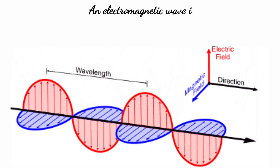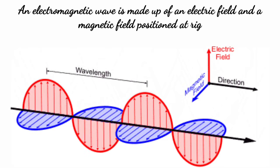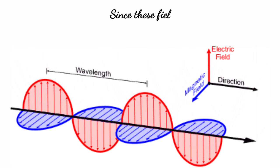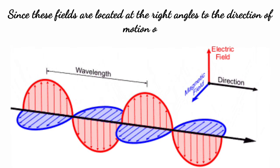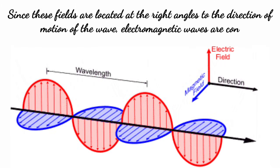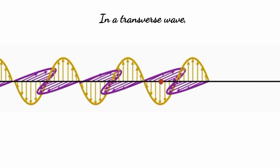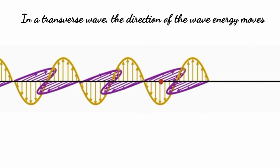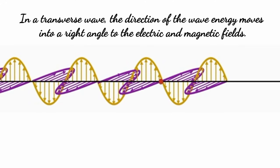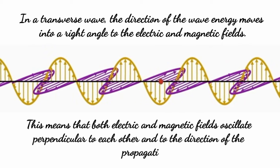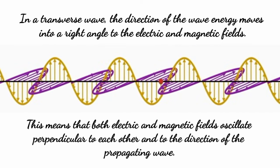An electromagnetic wave is made up of an electric field and a magnetic field positioned at right angles to each other and to the direction of motion of the wave. Since these fields are located at right angles to the direction of motion of the wave, electromagnetic waves are considered as transverse waves. In a transverse wave, the direction of the wave energy moves at a right angle to the electric and magnetic fields. This means that both electric and magnetic fields oscillate perpendicular to each other and to the direction of the propagating wave.